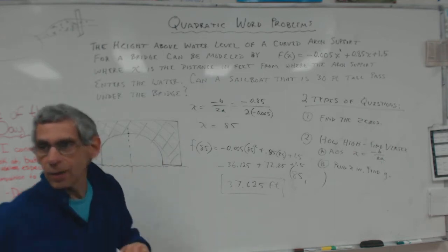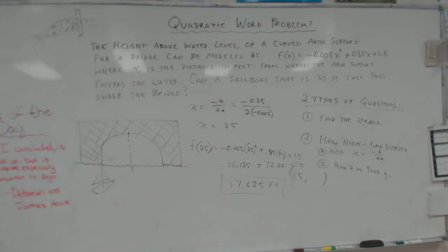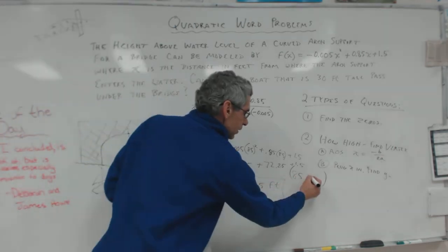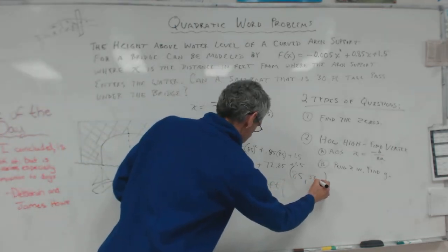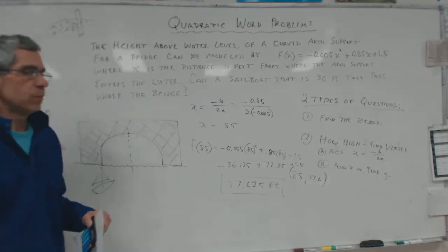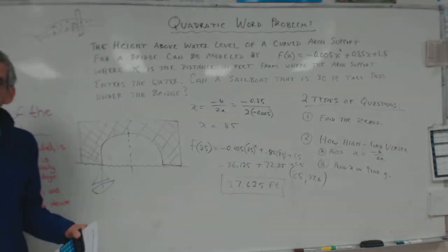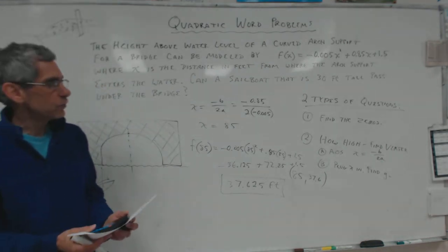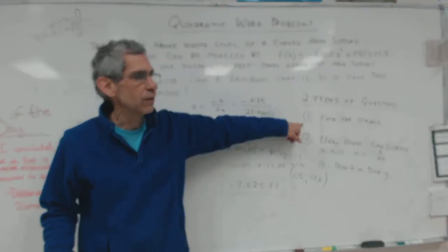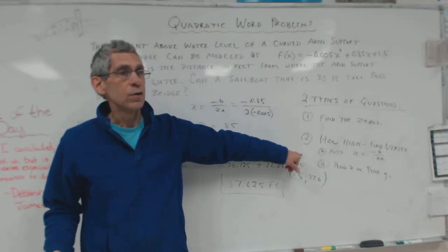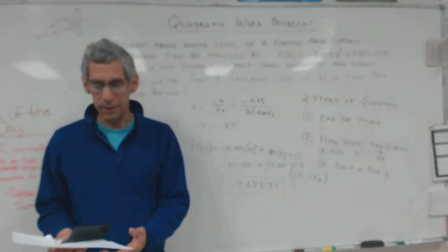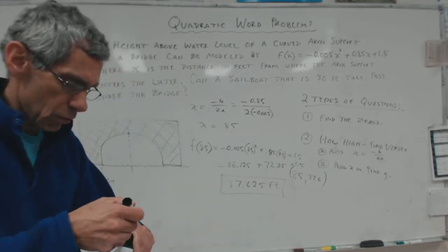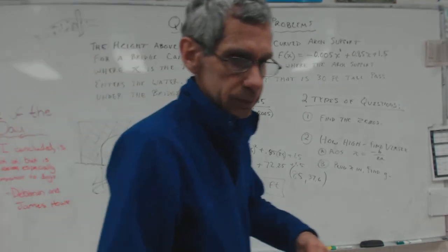So, will my sailboat that is 30 feet tall go under that? Yes. My vertex is 37.6. Beautiful. So, pretty easy, right? Pretty straightforward. All you have to do is figure out which question are they asking. Are they asking for the zeros? Or are they asking for the vertex? So, that's it. That is the end of the lecture. Bye.